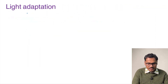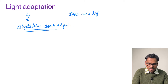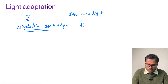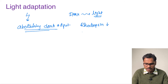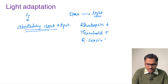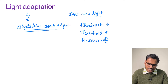Light adaptation is the reverse — we can say that abolishing dark adaptation is called light adaptation. Whenever a person enters from a dark room into a light area, the photopigments get bleached, so the levels of rhodopsin come down. If rhodopsin levels come down, the threshold increases, and if the threshold increases, the retinal sensitivity comes down. Exactly whatever happens in dark adaptation gets abolished in light adaptation.